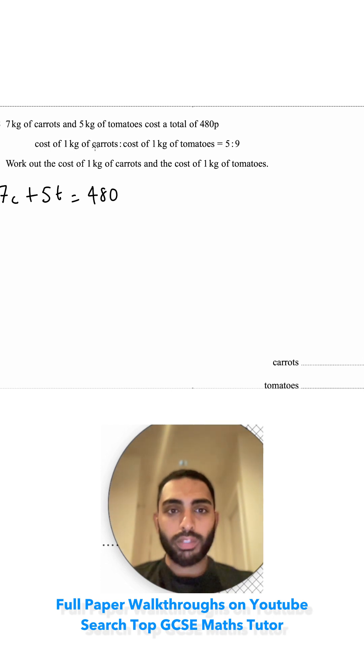The cost of 1 kilo of carrots to 1 kilo of tomatoes, so I've got carrots to tomatoes, is in the ratio 5 to 9. Could we translate this into an equation? I can cross multiply. So I've got 9c is equal to 5t.